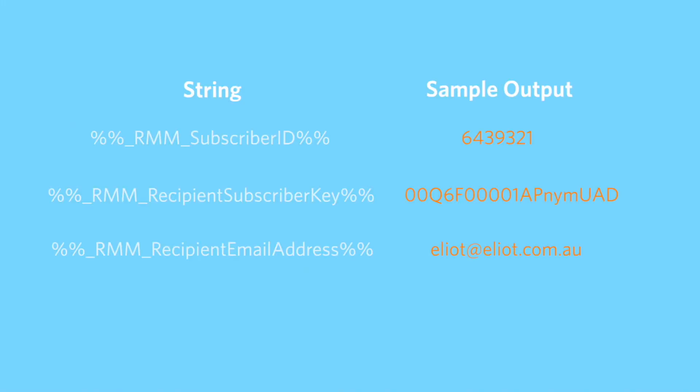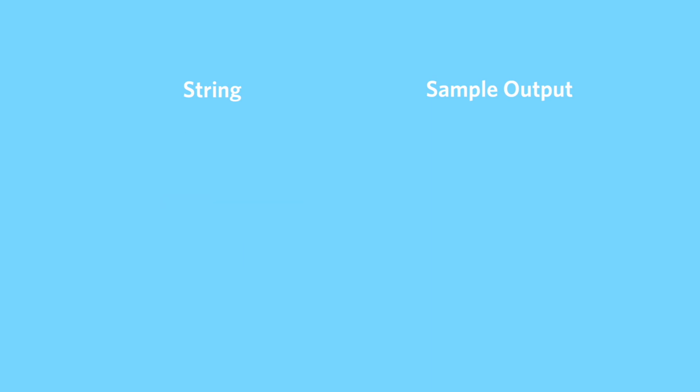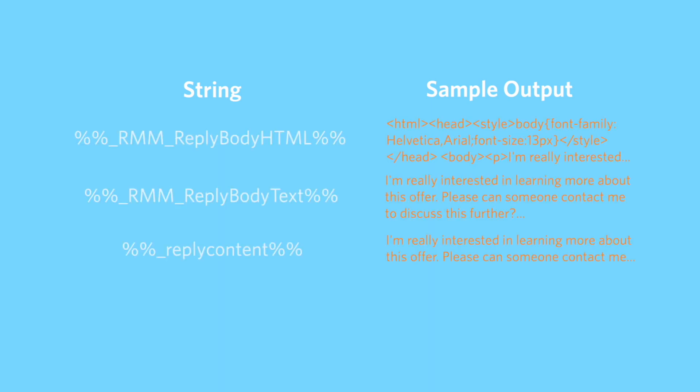Triggered send emails used for RMM forwarding or replies can contain specific personalisation strings to extract information from the reply email. These personalisation strings can be used with AMPscript to customise the forwarded email or the auto-reply email. There are a total of 11 different personalisation strings available for RMM, which include strings that return the subscriber ID, key or email address, return the job ID, list ID and batch ID of the original email, return the subject line and email headers of the reply message, and return an HTML format, plain text format, or abstract of the email reply.